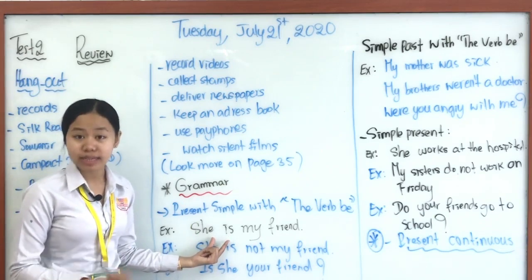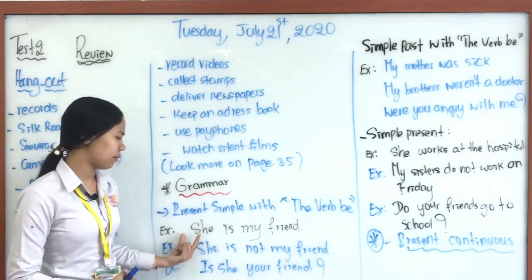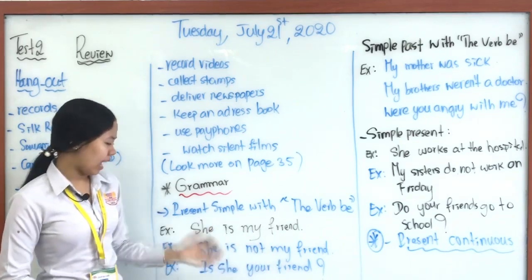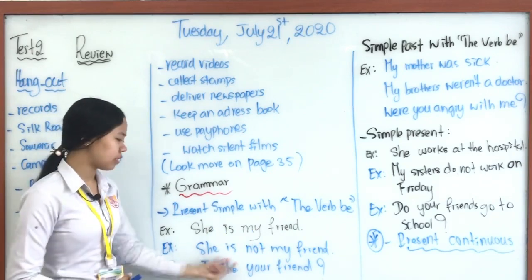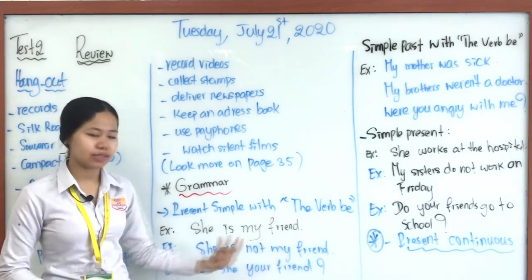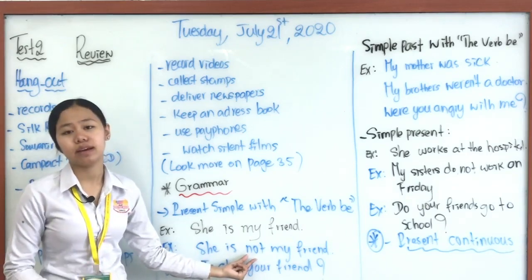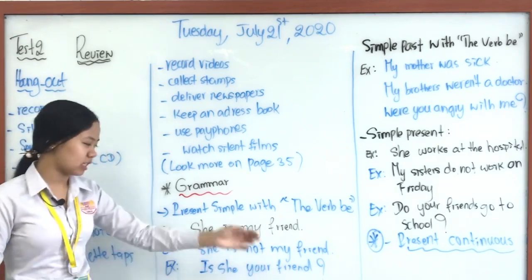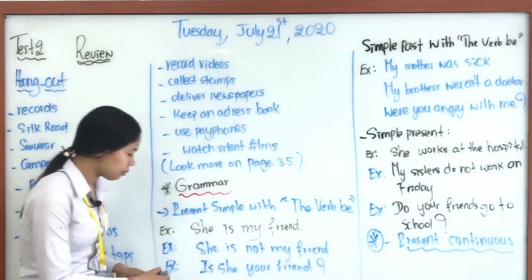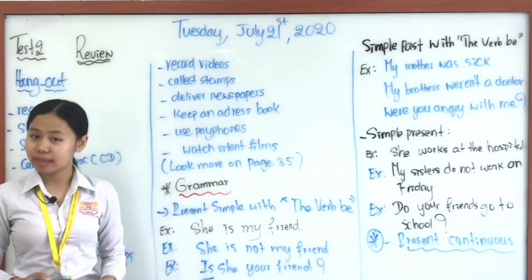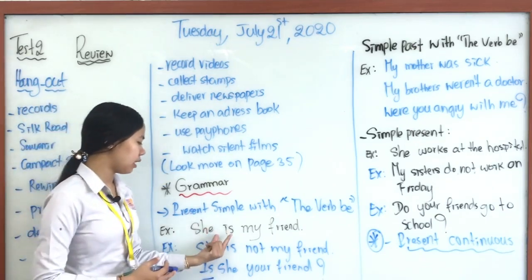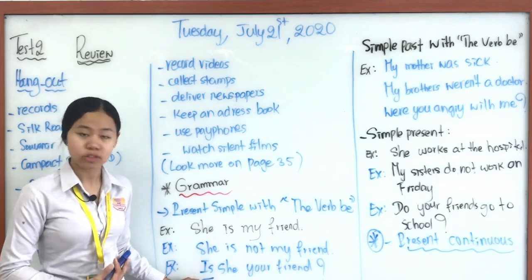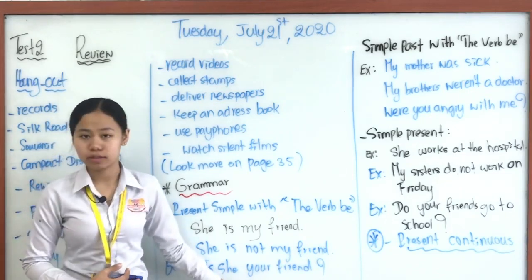In the negative form, we just add 'not': 'She is not my friend.' It's very easy — you just add 'not' after the verb 'be.' For the question form, you put the verb 'be' in front of the subject. In the positive form, verb 'be' comes after the subject, but in the question form it comes before the subject, followed by the object and a question mark.